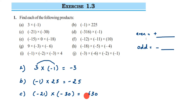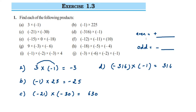The next one is minus 316 multiplied by minus 1. First multiply the numbers — any number multiplied by 1 gives the same number, so we get 316. What will be the sign? There are two negative signs, 2 is an even number, so the final answer is going to be positive. Or: minus into minus is plus. Whichever method is easy for you, go with that.